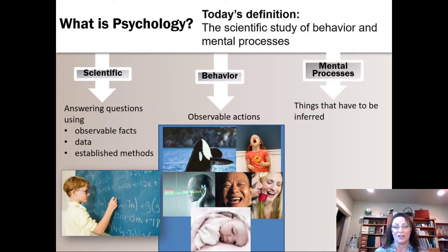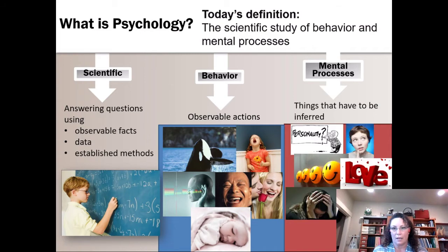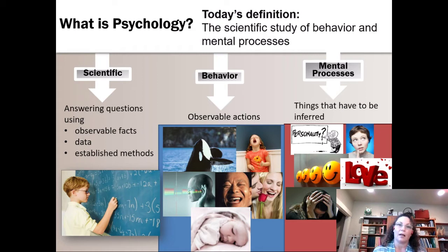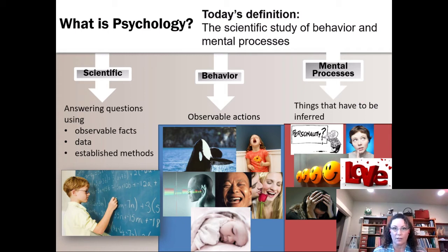Mental processes are all those things that you're drawing inferences about—things that we can't directly see, but we can draw inferences based on your behavior. These were harder to find pictures of because they're not directly observable. Personality would be a good example of a mental process; it's something that happens inside the person. We might be able to infer it from their behaviors. I mentioned introverts versus extroverts—we could infer that based on their reactions to loud music or their preference for attending parties.